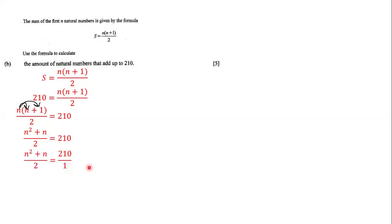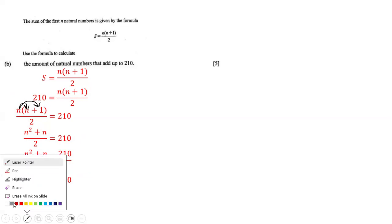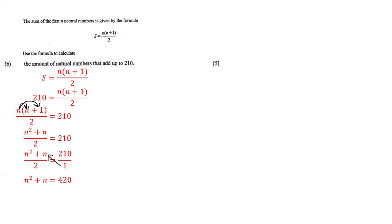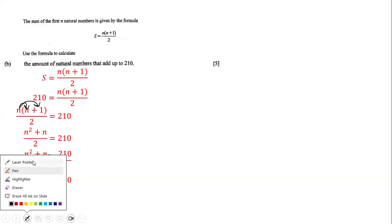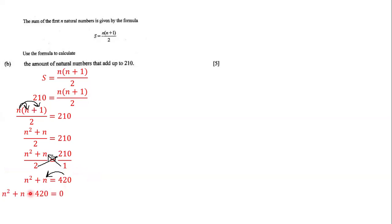We put 210 over 1 and cross multiply. 1 times (n² + n) gives n² + n, and 2 times 210 gives 420. So we have n² + n = 420. Sending 420 over the equal sign makes it negative, giving us n² + n − 420 = 0.